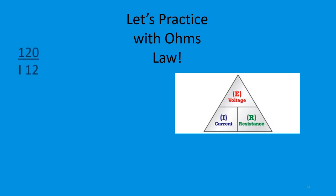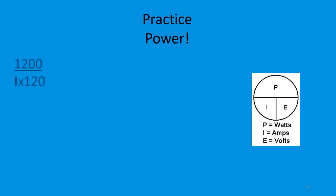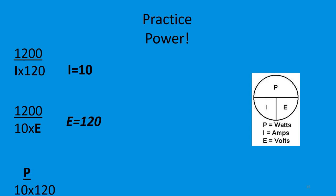Let's keep practicing with Ohm's Law. A 120-volt circuit with 12 ohms of resistance: divide 12 up into 120 to get a current of 10 amps. A 120-volt circuit with a 10-amp draw: divide 10 up into 120 to get resistance of 12 ohms. A 10-amp circuit with 12 ohms of resistance: multiply to get voltage E equals 120. For power: 1200 watts and 120 volts — divide 120 up into 1200 to get 10 amps. 1200 watts and 10 amps — divide 10 up into 1200 to get 120 volts. 10 amps and 120 volts — multiply to get 1200 watts.